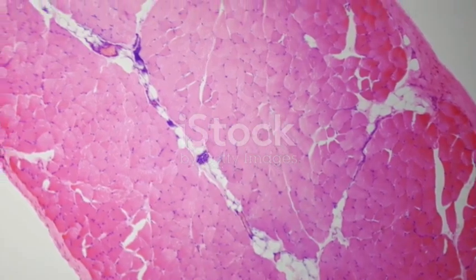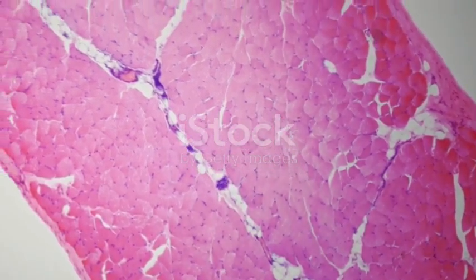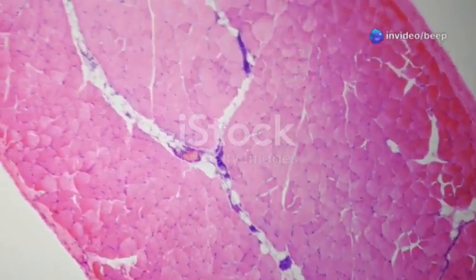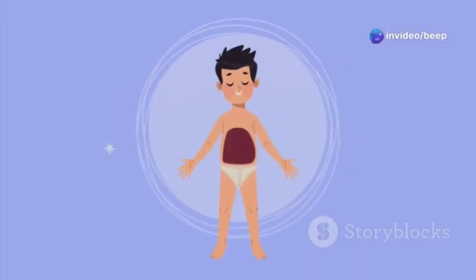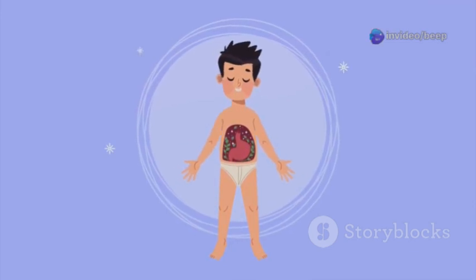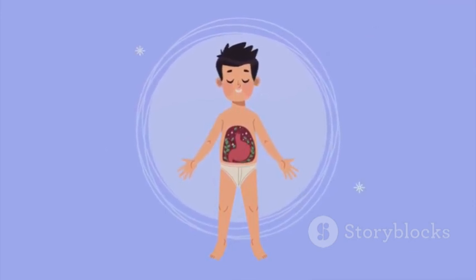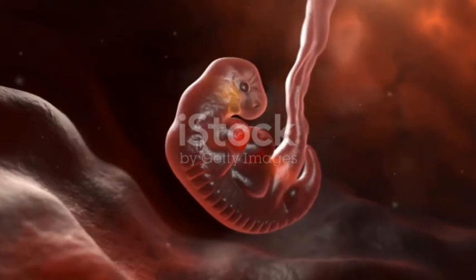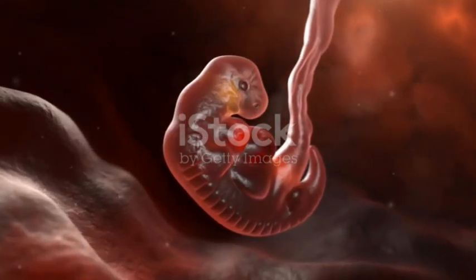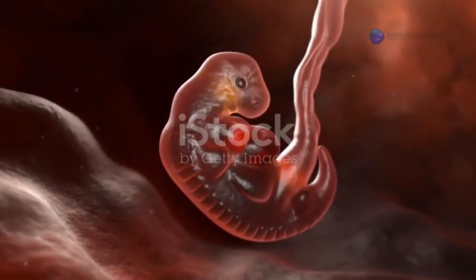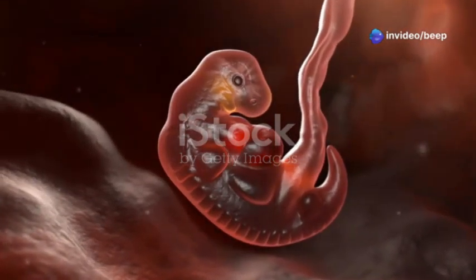The ectoderm forms the skin, hair, nails, nervous system, and sensory organs. The mesoderm gives rise to muscles, bones, cartilage, connective tissues, blood, and the lymphatic system. The endoderm forms the lining of the digestive tract, respiratory tract, urinary tract, and reproductive system.